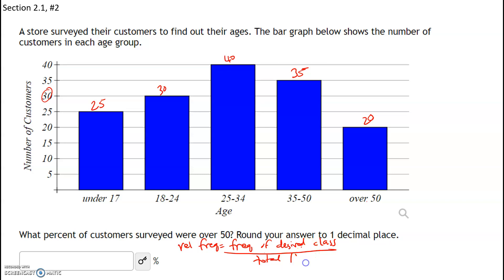Once we do that, that's going to be converted to a decimal. Then we're going to multiply this by 100 to get our answer in percent form. So we want to know what percent of customers surveyed were over 50.